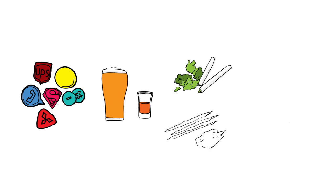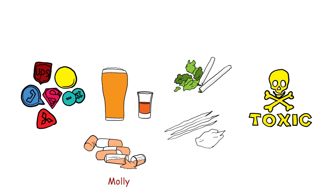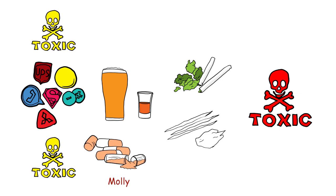Ecstasy is also commonly combined with alcohol or other drugs or cut with toxic substances, which can have potentially hazardous consequences. Molly, often heralded as the pure form of ecstasy, may contain any number of adulterants or chemicals that can have toxic effects.